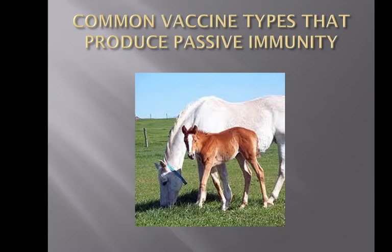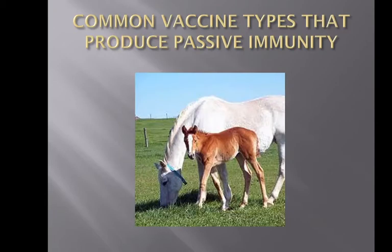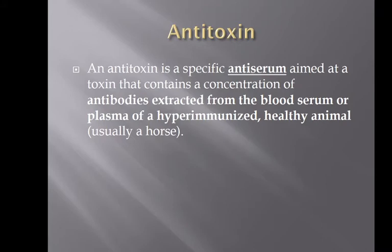Common vaccine types that produce passive immunity. Antitoxin is a specific antiserum aimed at a toxin that contains a concentration of antibodies extracted from the blood serum or plasma of a hyper-immunized healthy animal, usually a horse. We hyper-immunize the horse by giving it lots of vaccines so it develops a huge immune response, then grab the serum and the antitoxin within it to create that antiserum from the healthy animal.